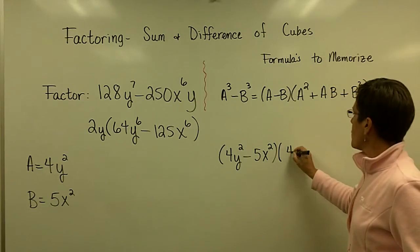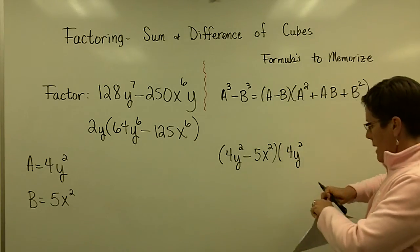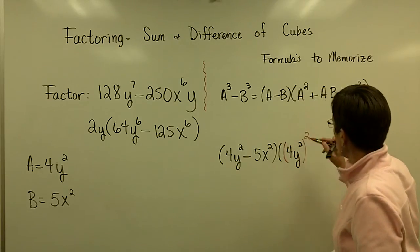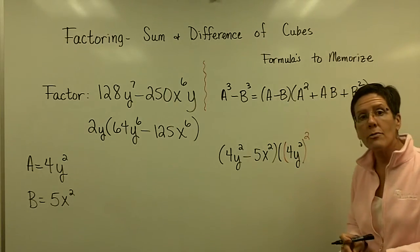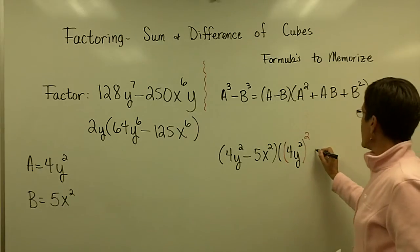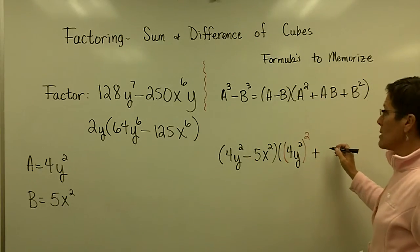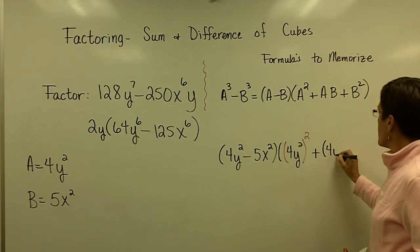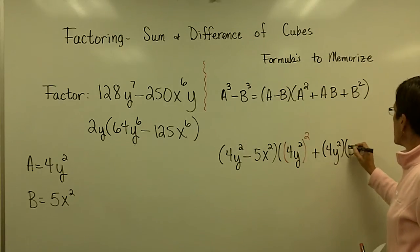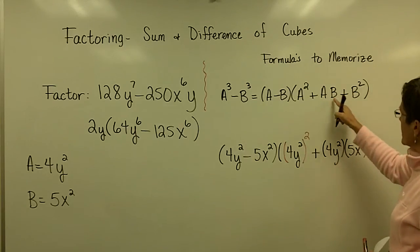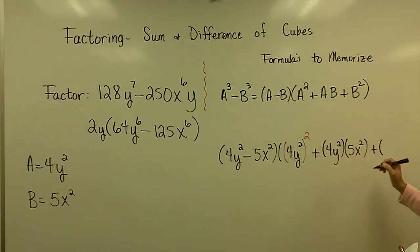Now I need to take 4Y squared and square that. That's going to become 16Y to the fourth. This sign has to be opposite that sign. And it has to be my A value, 4Y squared, times my B value, 5X squared - A times B. This is always a plus sign. And it is my B value, which is 5X squared, and that quantity has to be squared. This is what always has to be cleaned up.